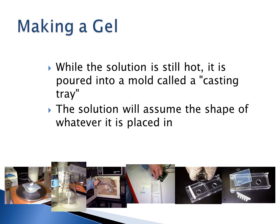Always remember to add a comb to the casting tray — a common beginner mistake is forgetting to add it, leaving a gel with no sample wells. Once you pour your liquid agarose and add the comb, let it sit and harden as it cools. Then pull your comb out and you have your agarose gel with sample wells ready. If you knew you were running a gel, you might make one before lunch and it's ready when you come back.